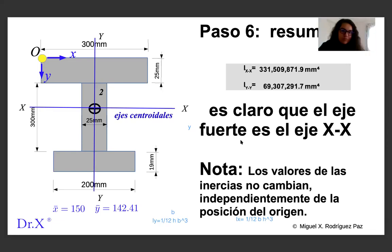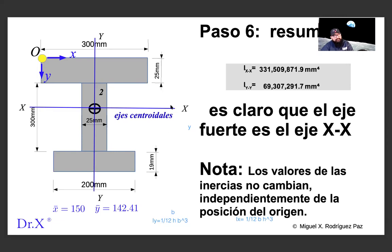This is the procedure to calculate moments of inertia. Every cross section has two inertias — one for x and one for y. If the figure is not a square, there will be a difference between the two values, leading to a strong axis and a weak axis.